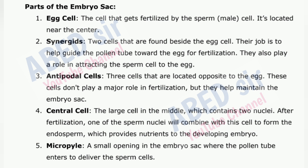3. Antipodal cells — cells that are located opposite to the egg. These cells don't play a major role in fertilization, but they help maintain the embryo sac. 4. Central cell — the large cell in the middle, which contains two nuclei. After fertilization, one of the sperm nuclei will combine with this cell to form the endosperm, which provides nutrients to the developing embryo.